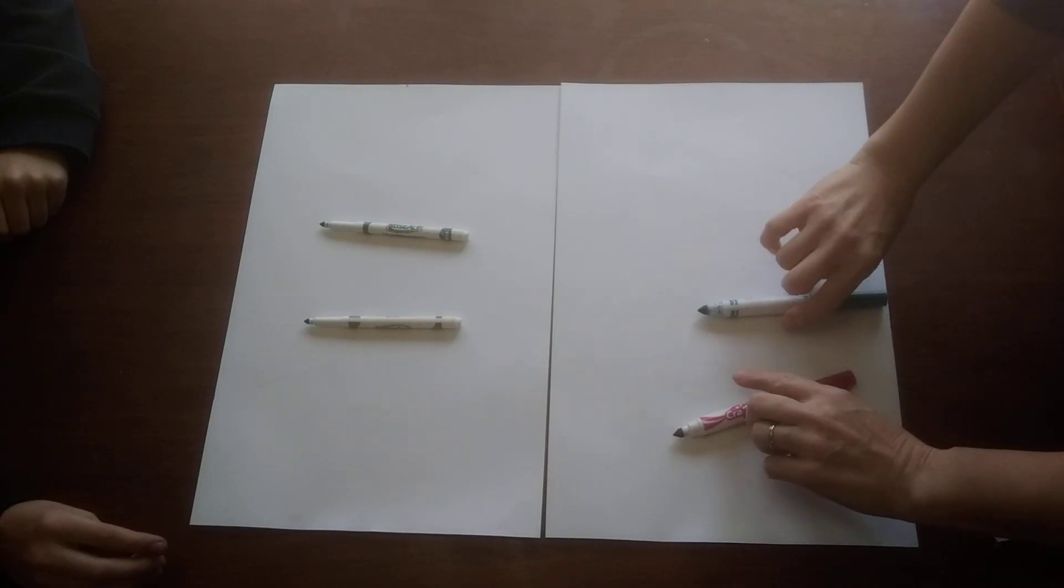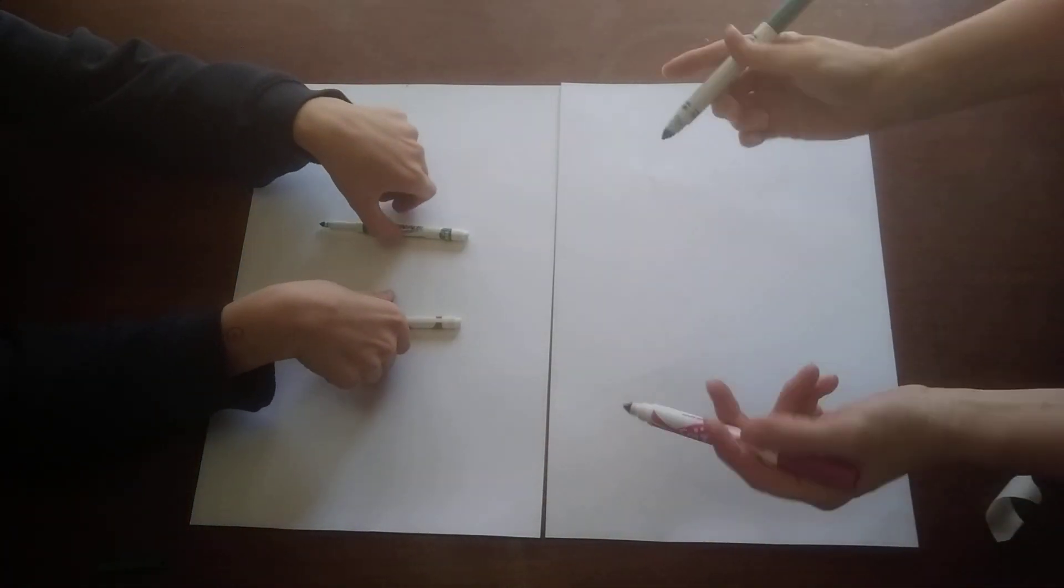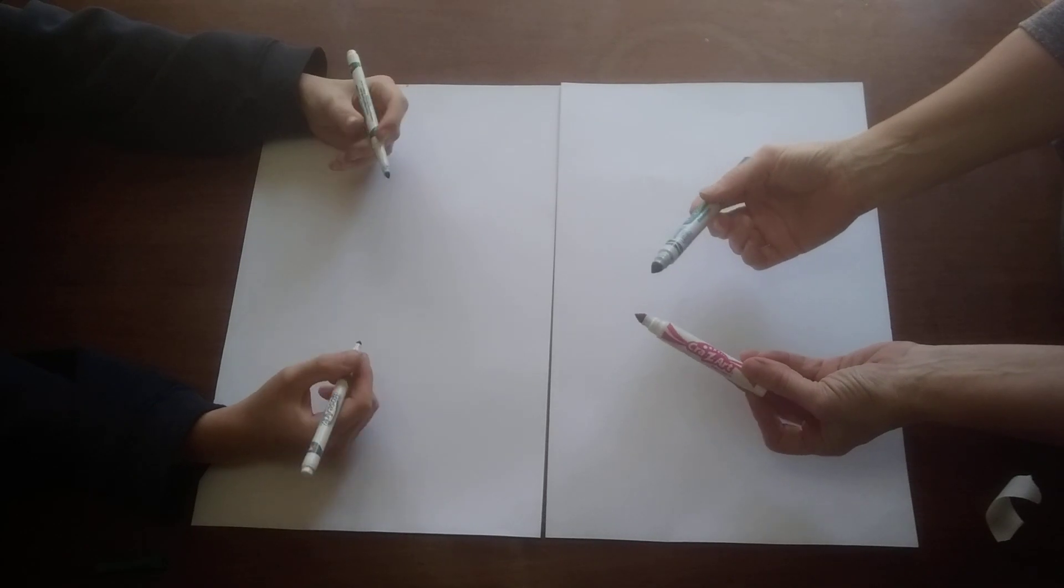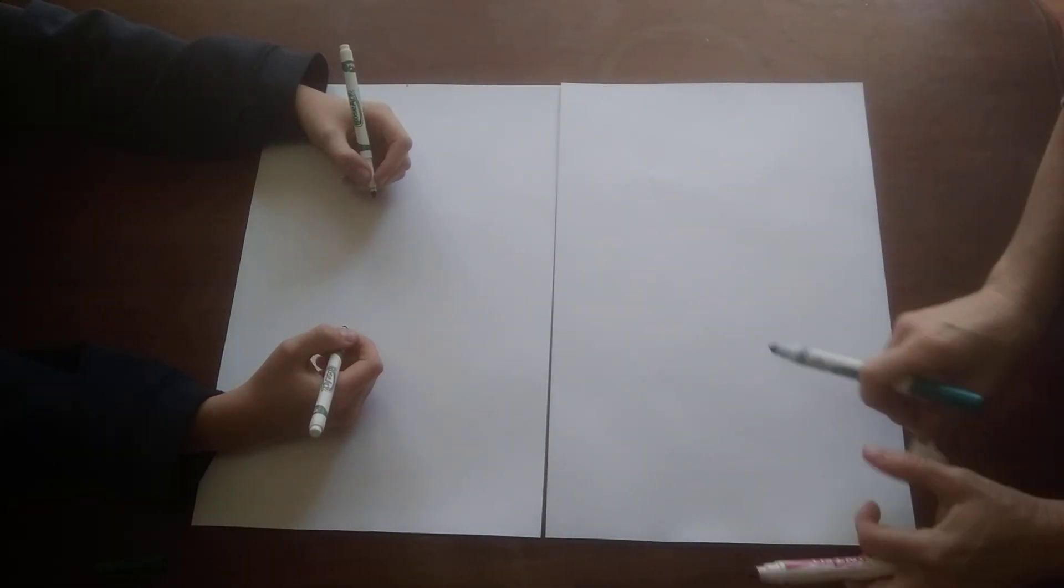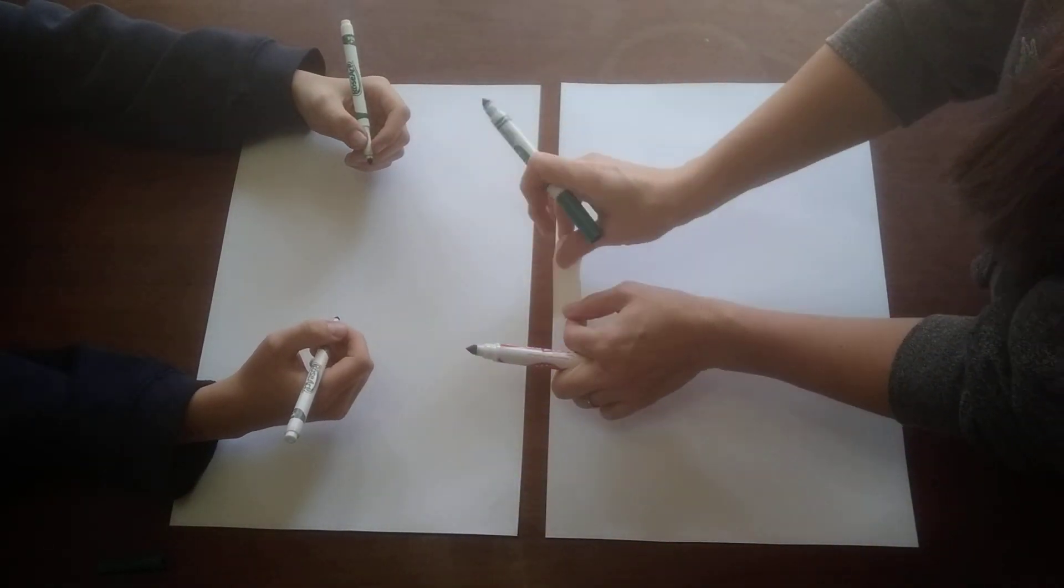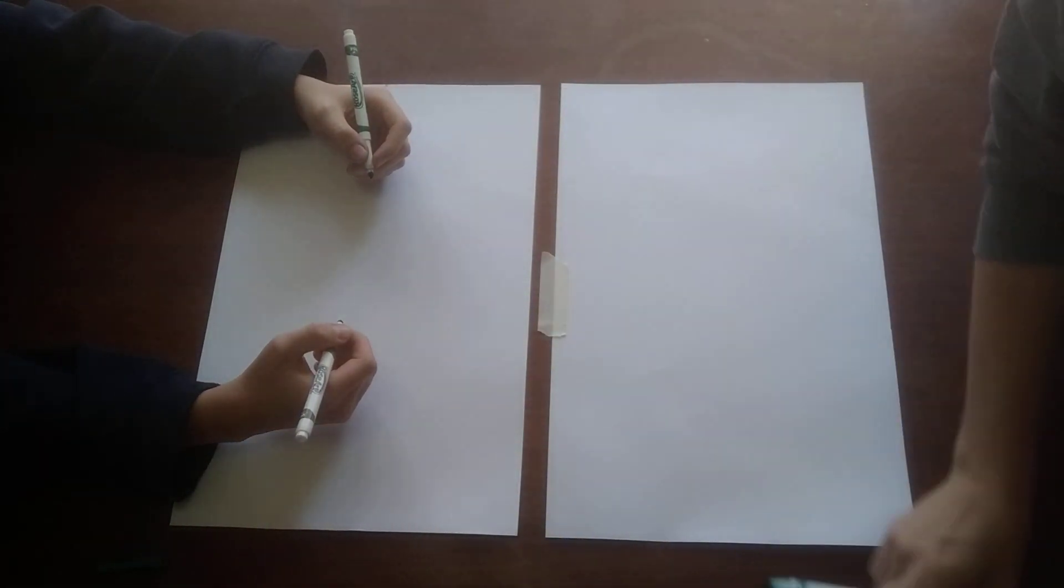All right, we're ready to do our Heather Hansen project. We have our drawing utensils for each of our hands and Jonah is going to be the leader. We're going to tape our papers down before we get started so they don't move around while we're drawing.